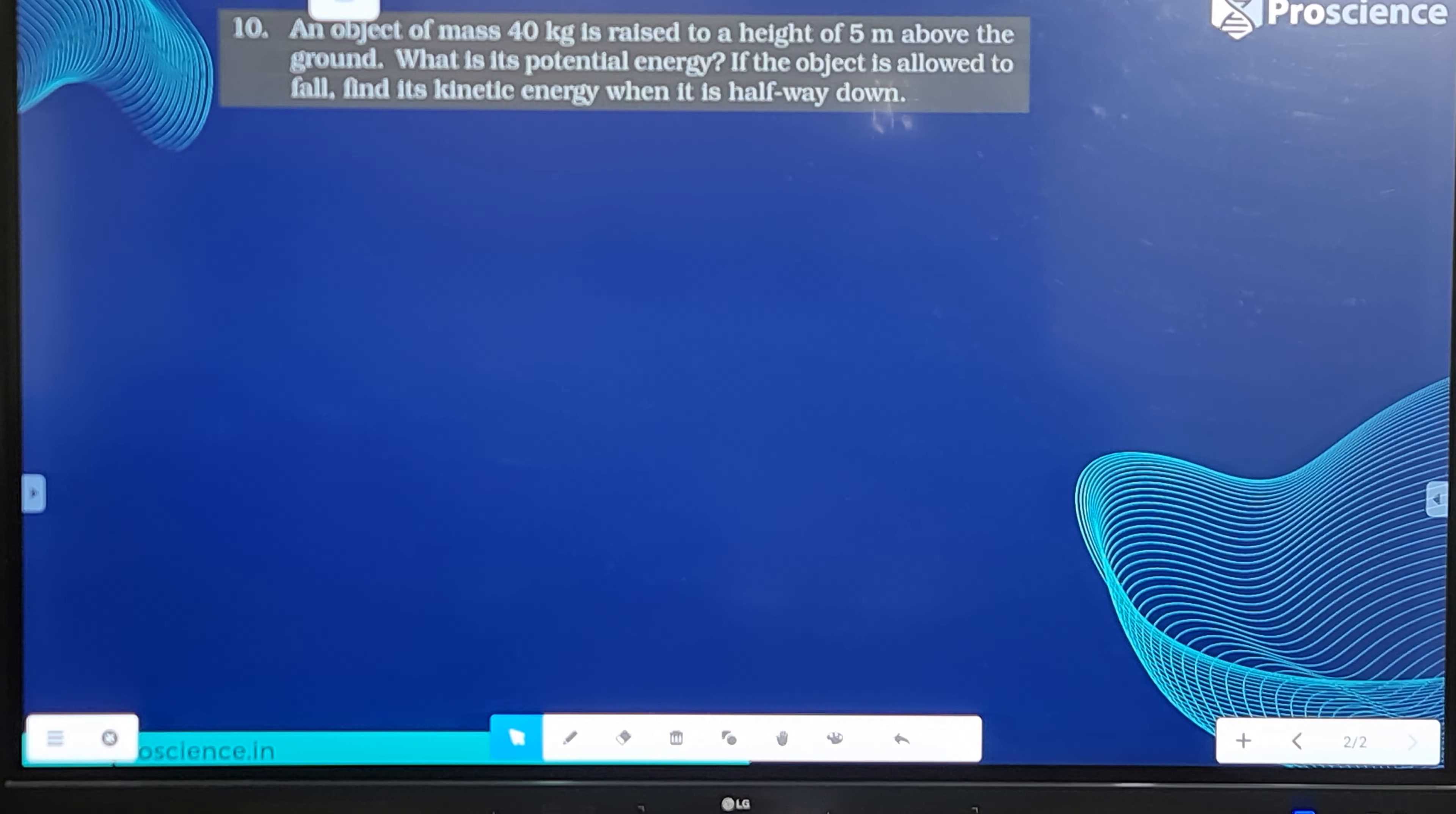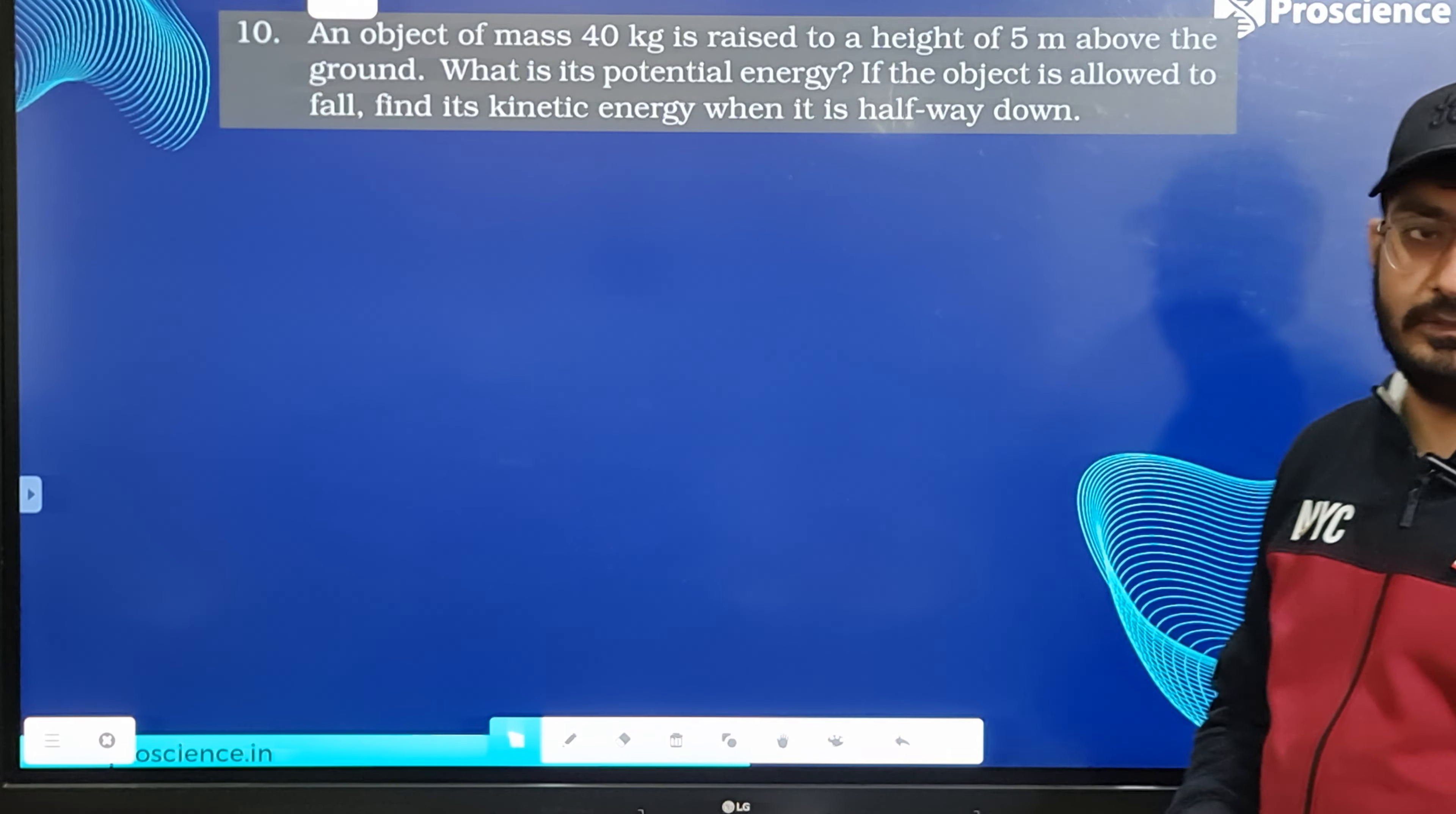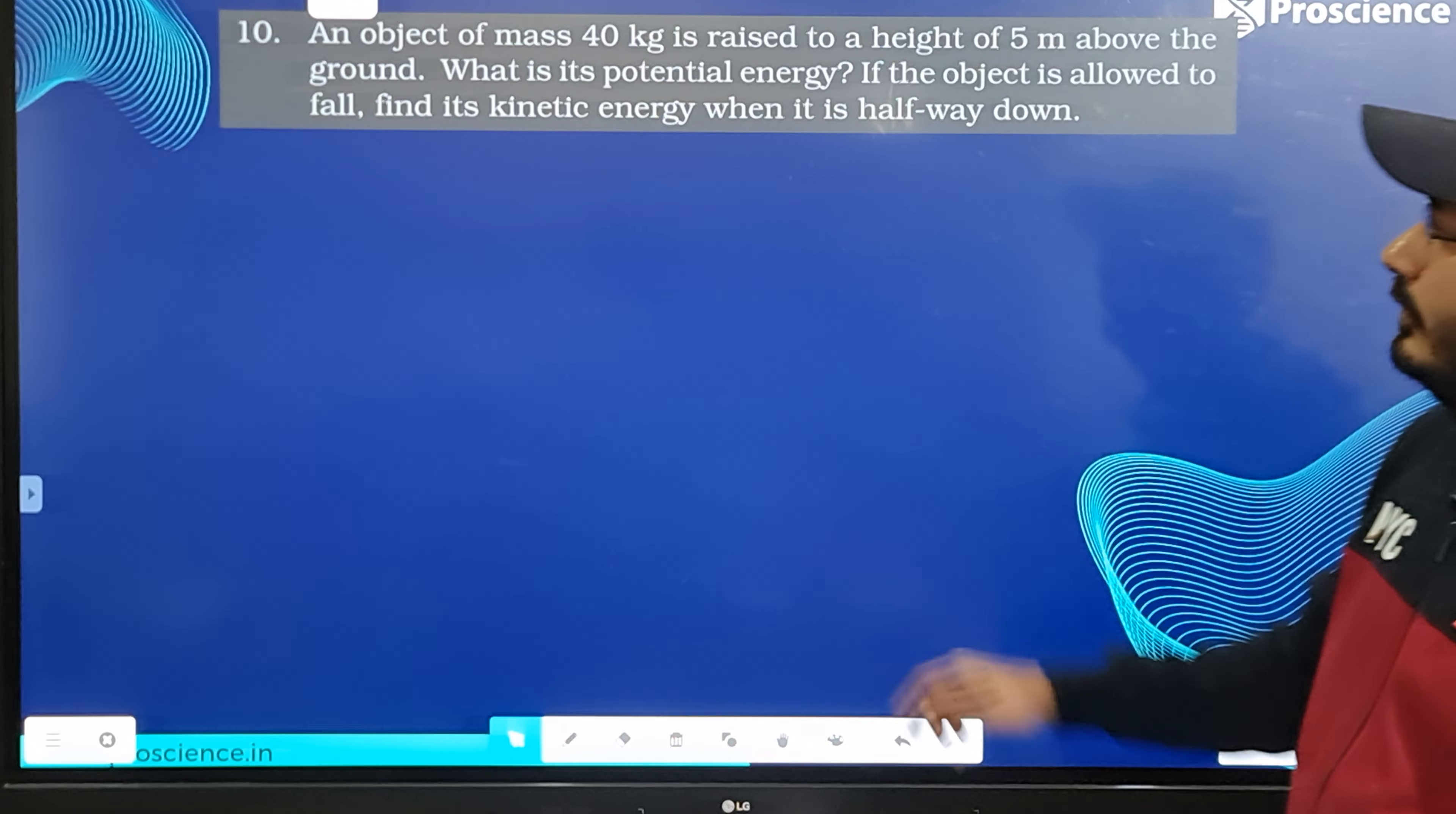The question is saying an object of mass 40 kg is raised to a height of 5 meters above the ground. What is its potential energy? If the object is allowed to fall, find its kinetic energy halfway down.